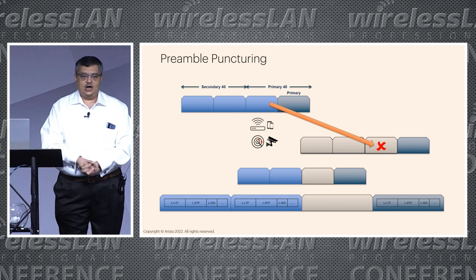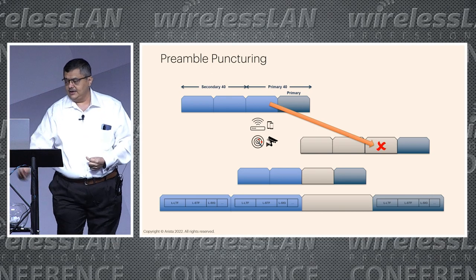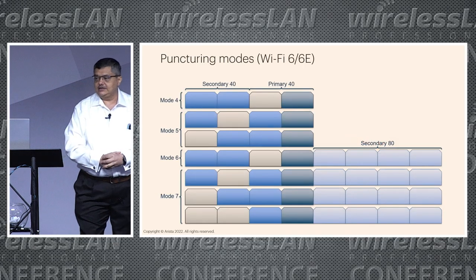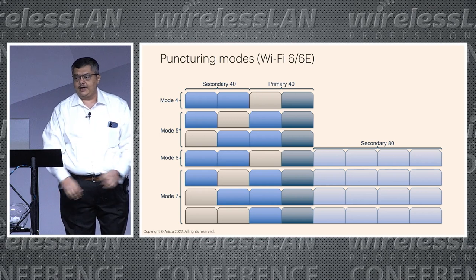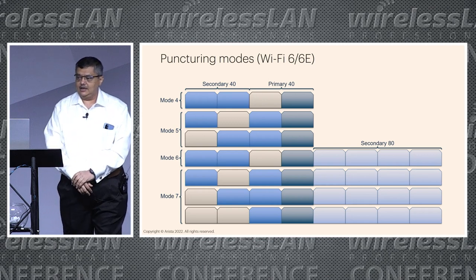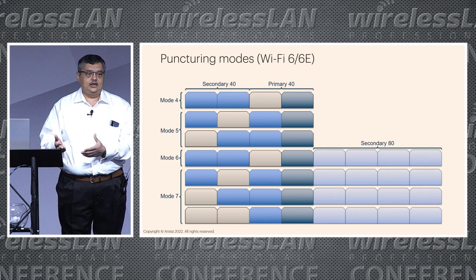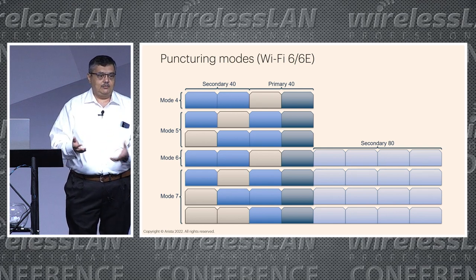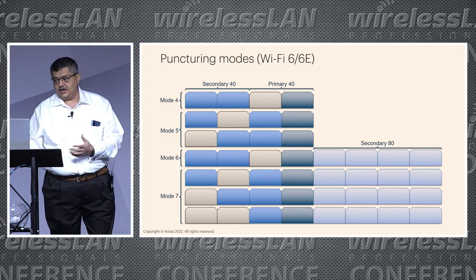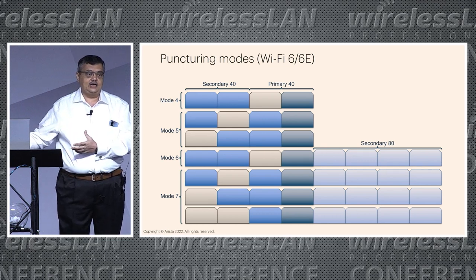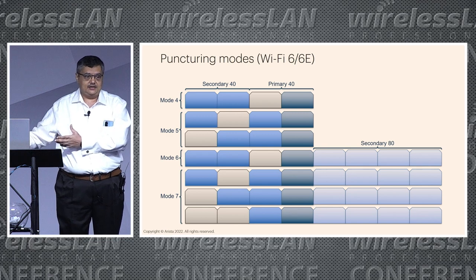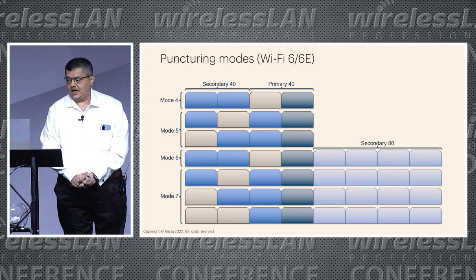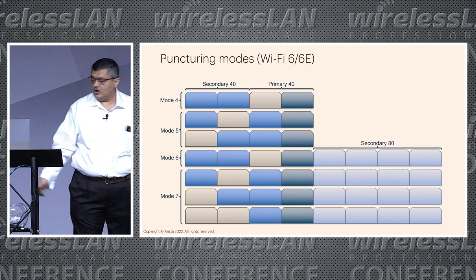This is basically how preamble puncturing works, as defined in the 11AX or Wi-Fi 6 protocol. There are different modes: you could puncture any one of the three non-primary channels in an 80MHz block. But in a 160MHz block, you could block out the entire secondary 80, along with any one of the primary or secondary 40MHz blocks.